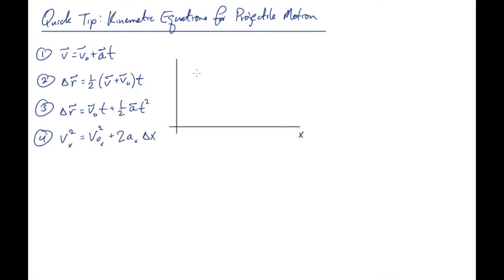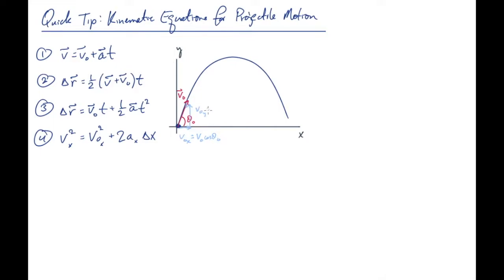Let's think about a projectile launched at an initial velocity v-naught and initial angle theta-naught. That initial velocity has components v-naught x equal to v-naught cosine theta-naught, and v-naught y equal to v-naught sine theta-naught. It'll travel along the path shown here, passing through these points.